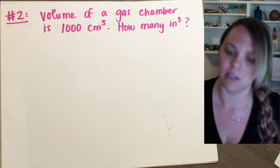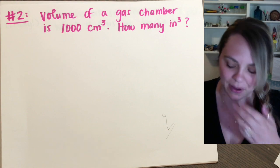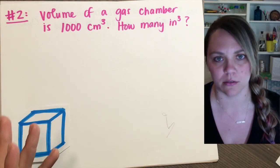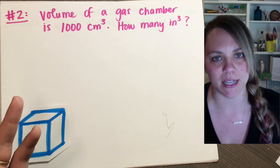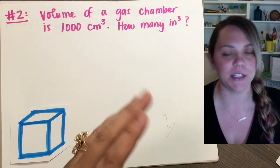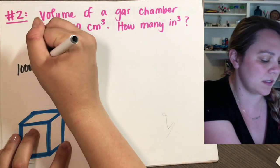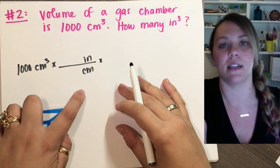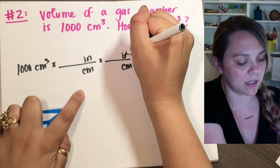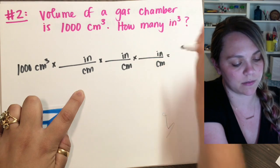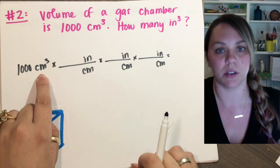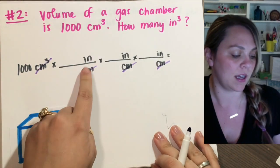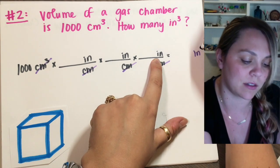A slightly more complex example: if you're talking about a volume — a 3D structure — a volume of a gas chamber is 1,000 centimeters cubed. That's like length times width times height, 10 by 10 by 10. How many inches cubed is this? Start with your given: 1,000 centimeters cubed. I need to get out of centimeter and into inch, and I need to do this three times — centimeter to inch, centimeter to inch, centimeter to inch. Because centimeter times centimeter times centimeter will cancel out with the centimeter cubed, and I'll have inch times inch times inch, giving my answer in inches cubed.